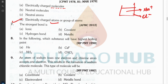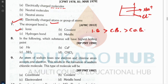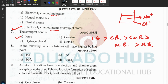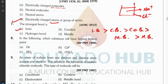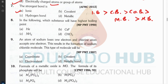Question seven asks which is the strongest bond. The answer is ionic bond. The order of bond strength is: ionic bond first, then covalent bond, then coordinate bond, then metallic bond, and lastly hydrogen bond.